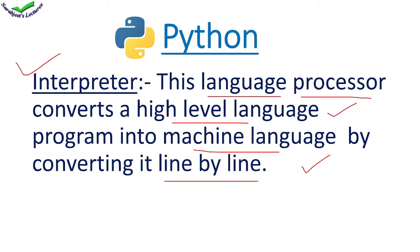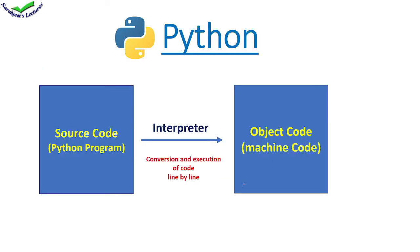The interpreter converts it from high-level language to machine language and executes it at the same time. Suppose you've written a Python program, which we call source code. The interpreter reads the source code, reads the first line, and converts it to object code.